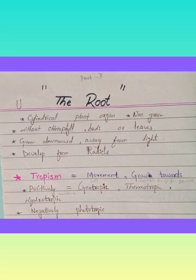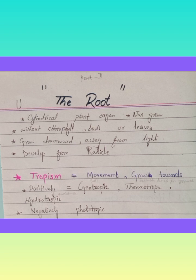Dear students, we are starting a new chapter about the root. It is the third chapter of morphology of flowering plants. In this chapter, we are going to discuss the details of a root, the different types of roots, the different modifications occurring in roots, special types of roots, and the functions of roots as well.